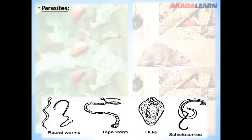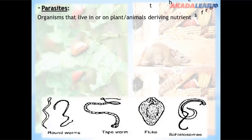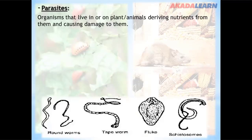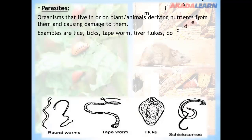Parasites are organisms that live in or on plants or animals, deriving nutrients from them and causing damage to them. Examples of parasites are lice, ticks, tapeworm, liver flukes, dodder, mistletoe, and Striga.